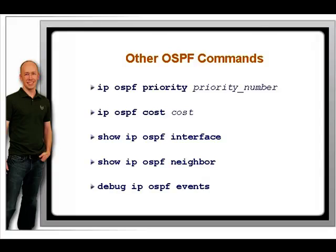Interfaces connecting the two routers must be in the same area. Password authentication, if being used, must be the same, and the type of area must be the same. This last item is outside the scope of the CCNA exam, but it is covered on the CCNP exam.